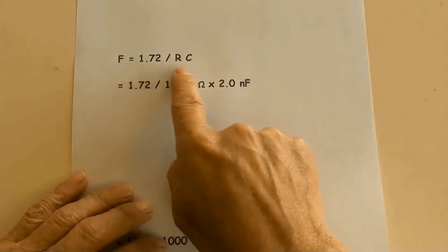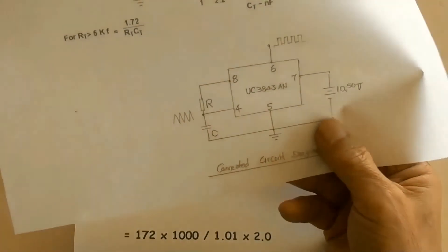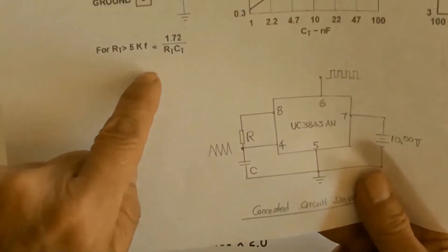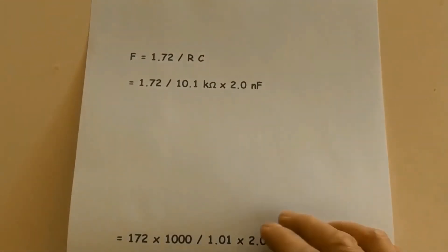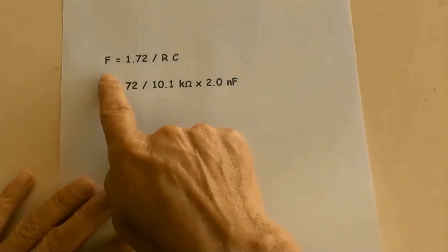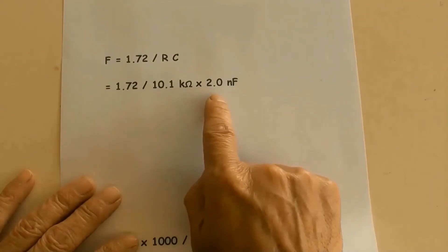F equals 1.72 over RC. F equals 1.72 over 10.1k ohms times 2nF.